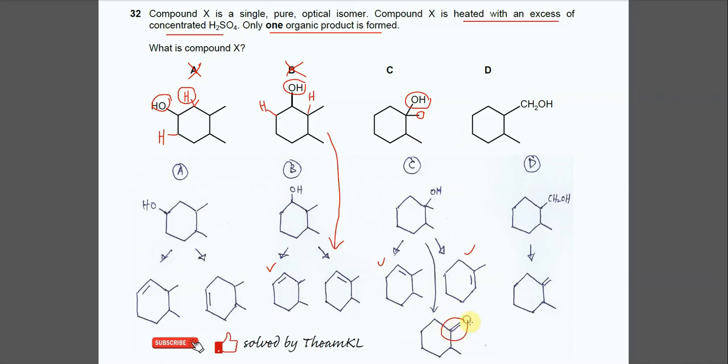Right? The double bond is here. So the compound in C will form three alkenes. So it's not the answer.